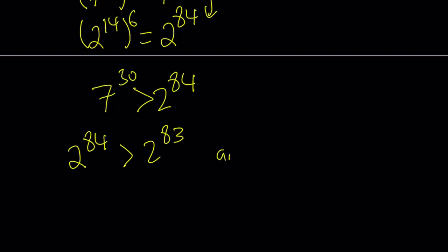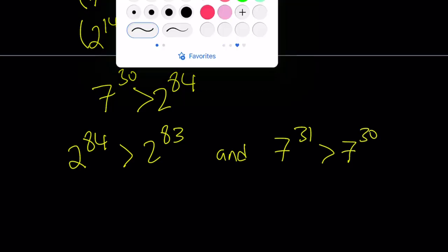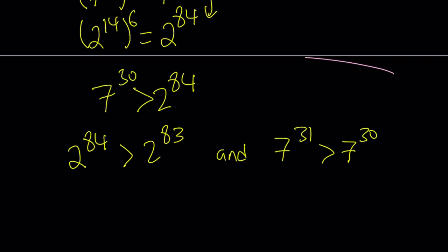And we also know that 7 to the power of 31 is greater than 7 to the power of 30. So I have three different inequalities here, and how do I put all of this together? That's what we're going to do next.